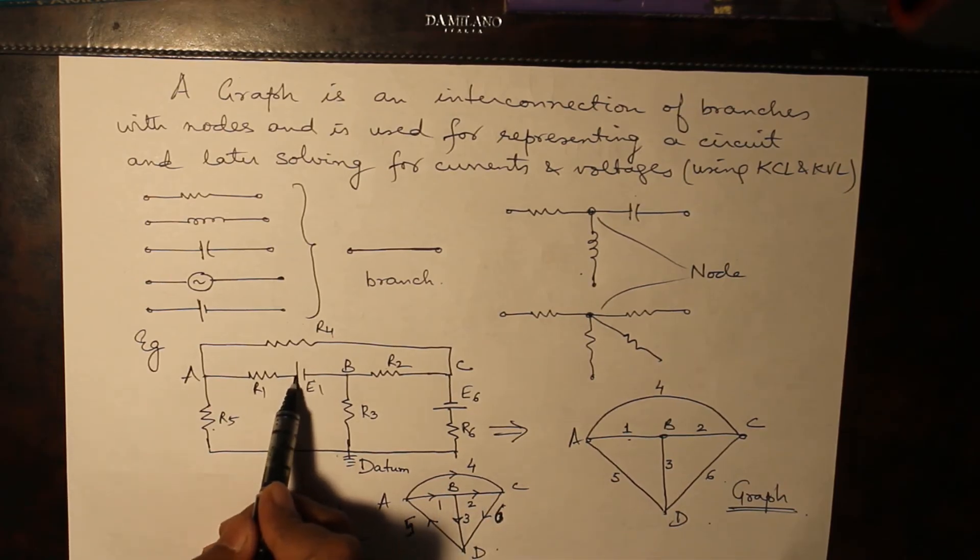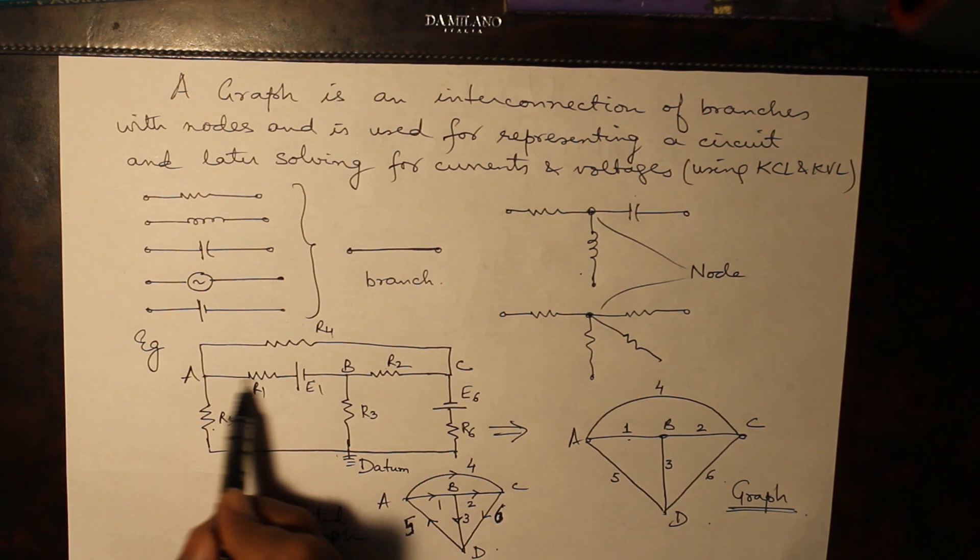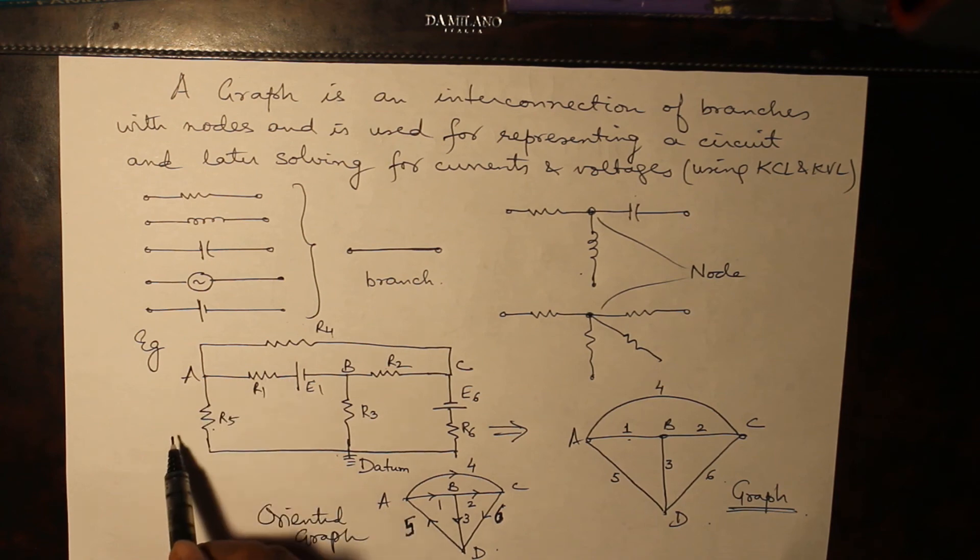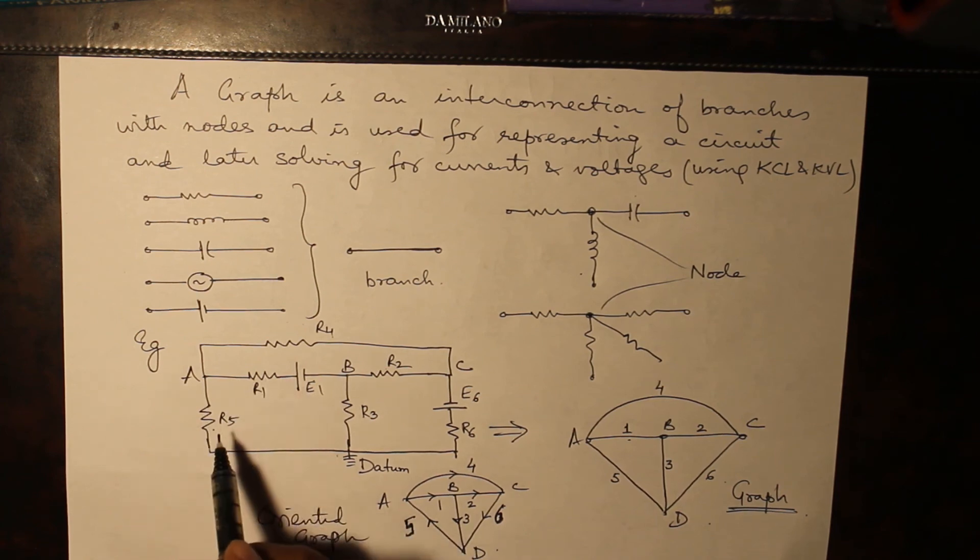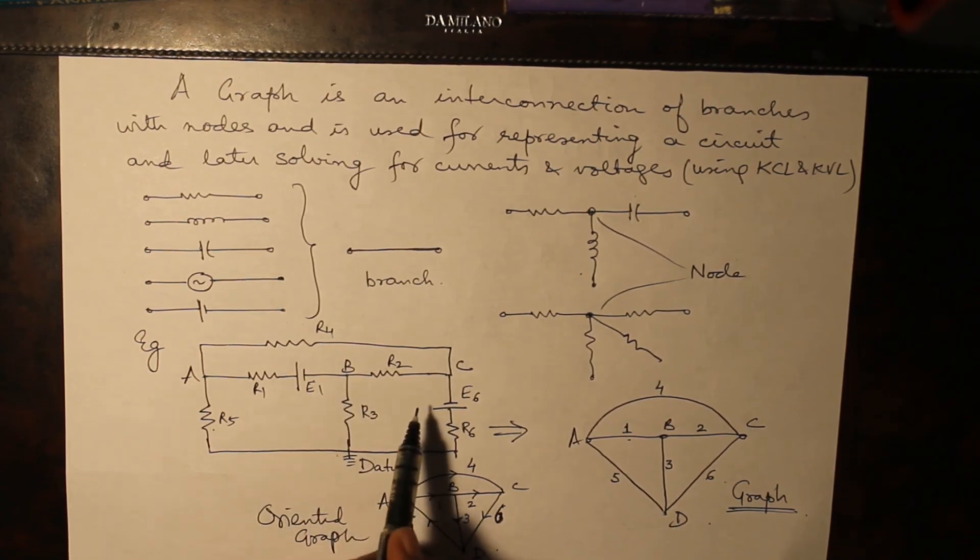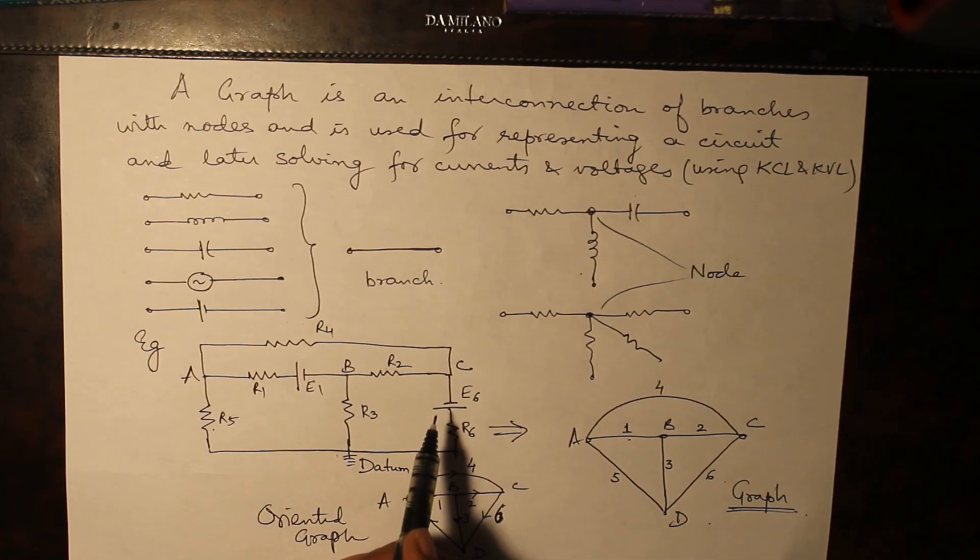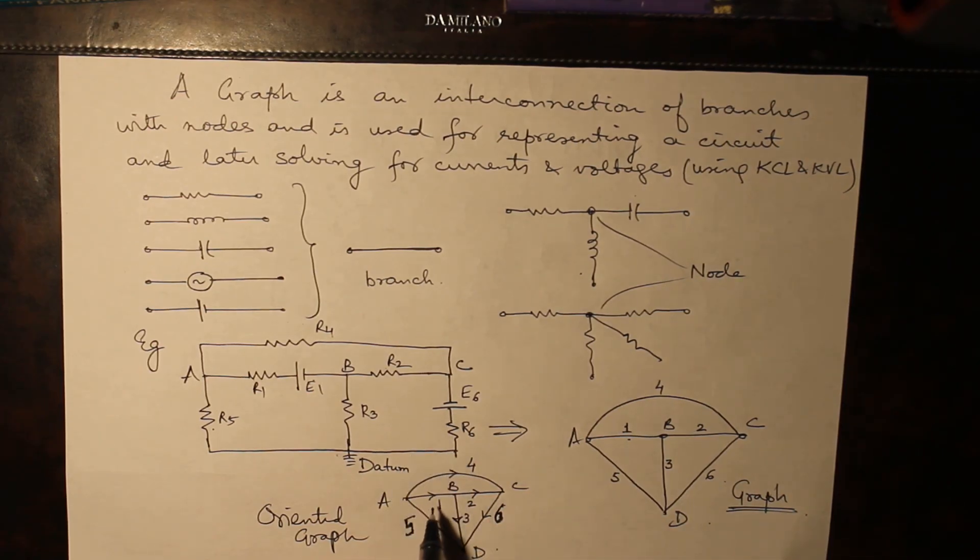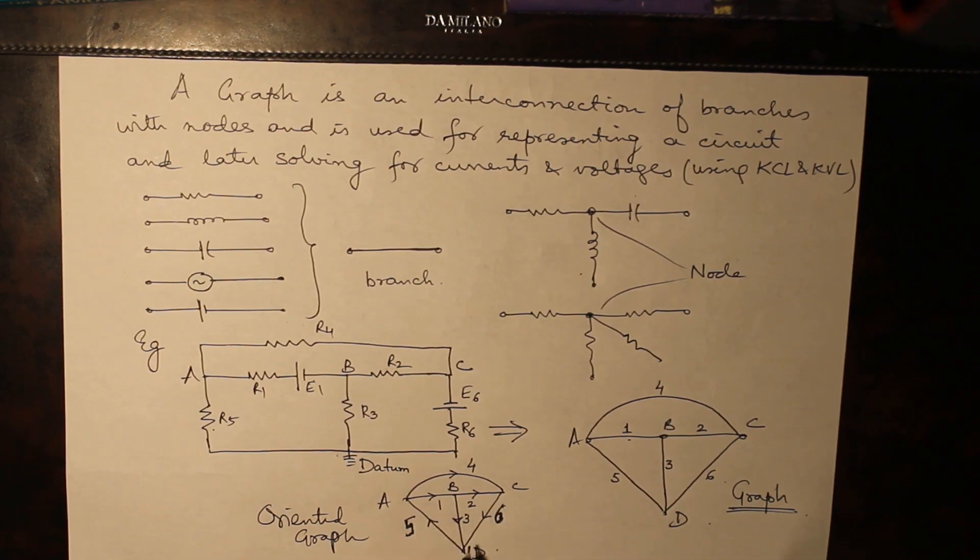The voltage source was here and the current which should flow in this circuit may be from here. But you cannot be sure. Because when there are one or more than one source, in what direction the current is flowing cannot be known until you solve the circuit completely.